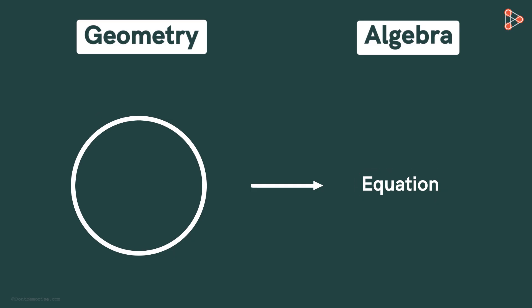To find the equation of a circle, let's name a few things. Let the center be O and let its coordinates be H, K. Similarly, let P be any point on the circle with X, Y as its coordinates. Also, let's denote the radius by R.